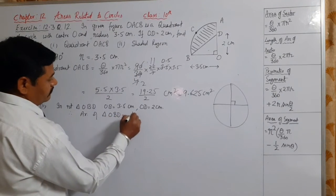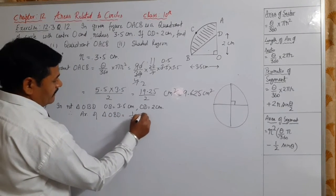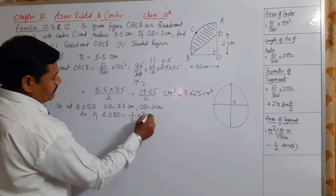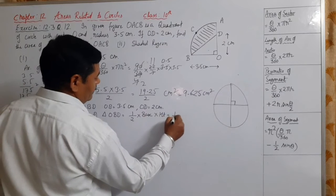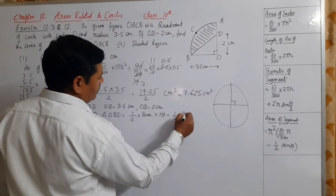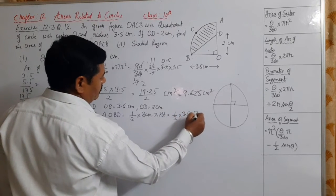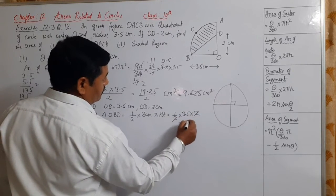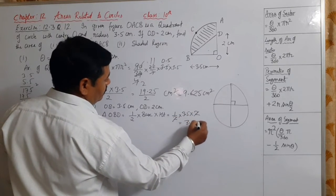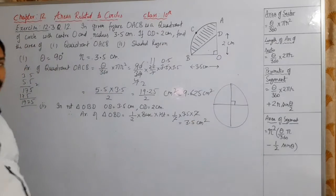Area is equal to 1 by 2 into base into height, which is 1 by 2 into 3.5 into 3.5, which equals 6.125 cm square. This is the area of triangle O, B, D.